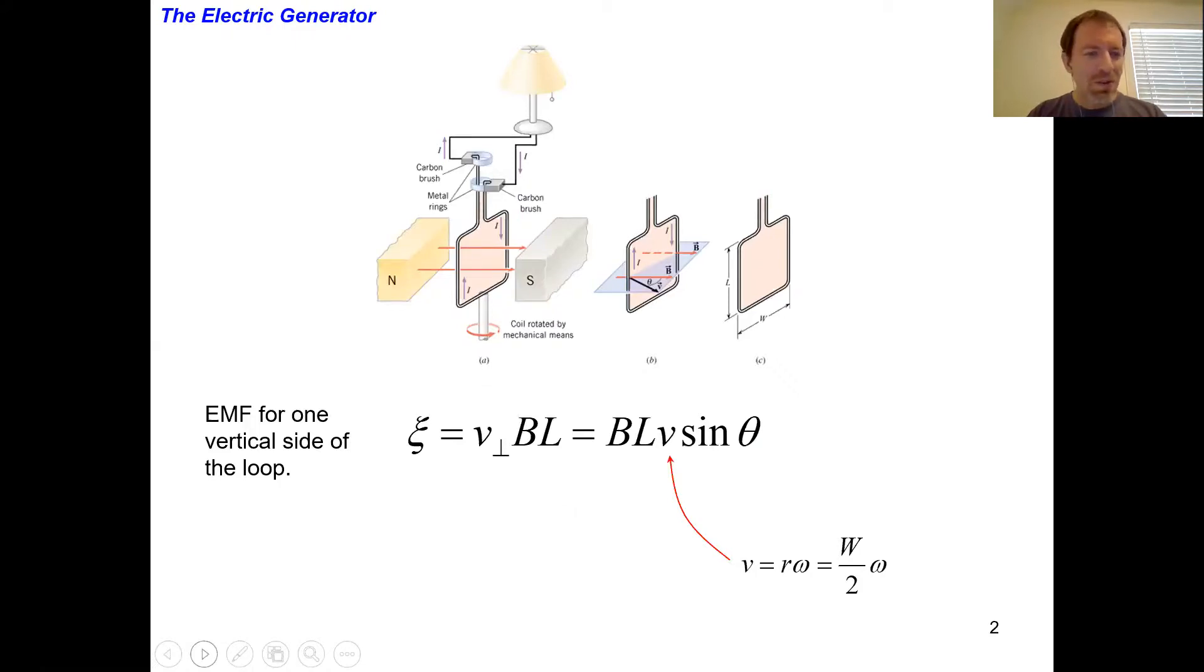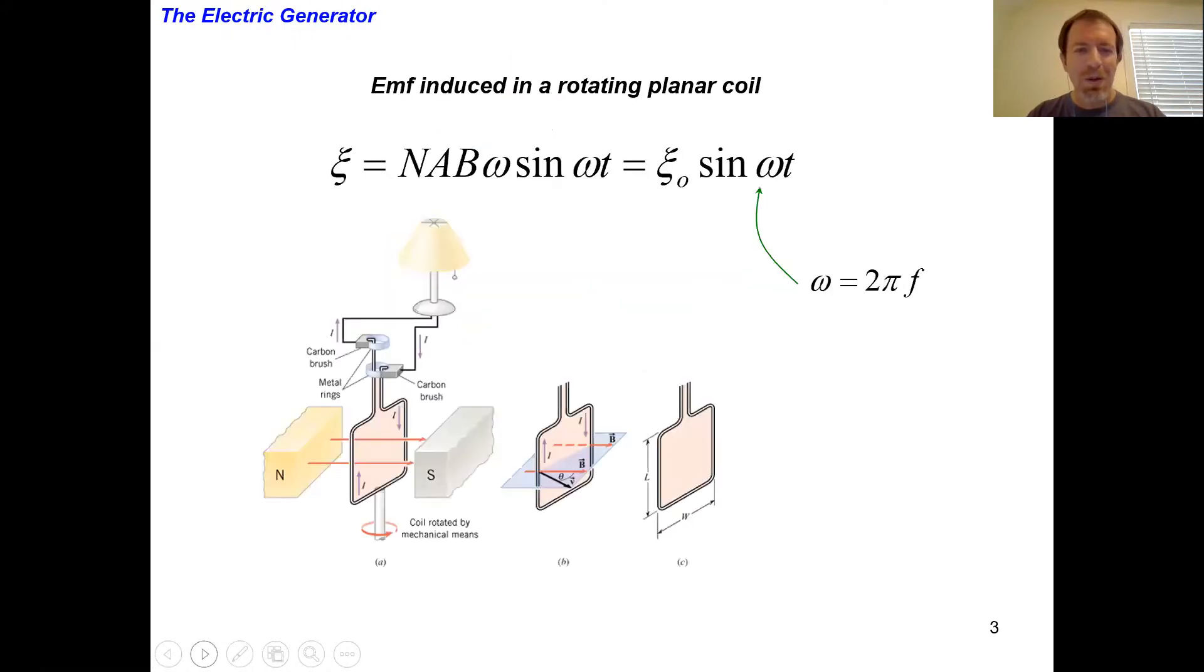Well, except for one thing. We notice that as this thing spins around, our direction of our current is going to change depending on which side of the loop is which way. The same way when we talked about motors—we said we have this flip-flop motion if we don't have a break. Well, it's going to be the same thing with the generator.